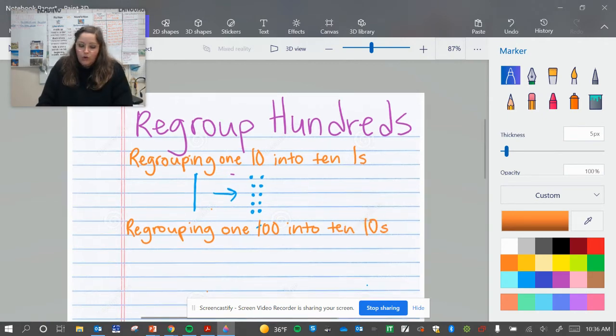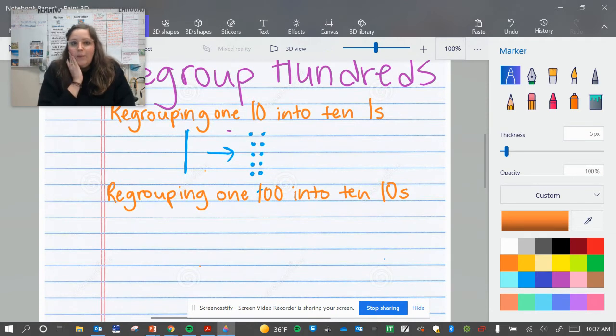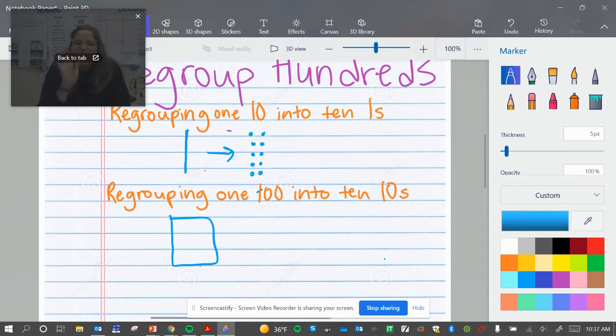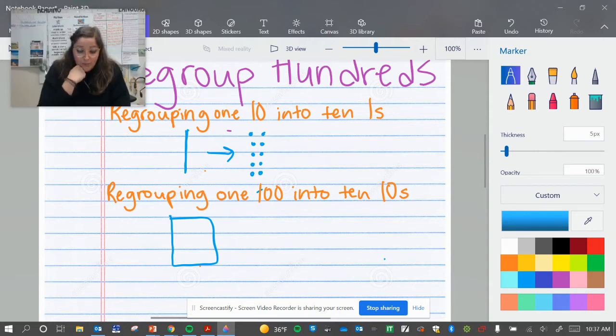Regrouping 100 into 10 tens. If you need to pause and write those, go for it. So what that looks like is I have 100. This is how I show a hundreds block. I don't need to draw all the grid and stuff inside. That's not necessary at all. But I do need to draw that square. This is how we draw 10. This is how we draw ones. We just do 1 stick, dots for ones, blocks for 100.